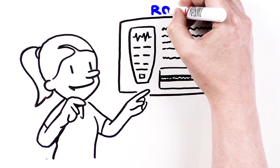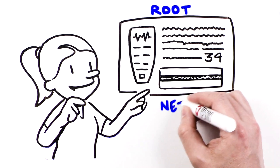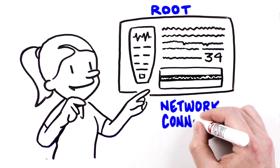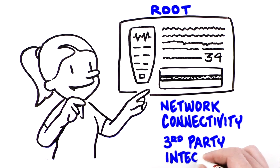SEDLINE Brain Monitoring Data is displayed on Root, which combines a high-resolution screen with built-in network connectivity and third-party device integration.